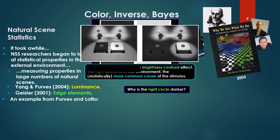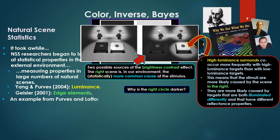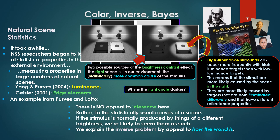Well we look at a natural scene. There's two possible sources of the brightness contrast effect we're just talking about. The right scene is in our environment, a normal environment, the statistically more common cause of the stimulus. Why? Because high luminance surrounds co-occur more frequently statistically with high luminance targets than with low luminance targets. This means that the stimuli are more likely caused by the scene on the right. They are more likely caused by targets that are both illuminated differently and have different reflectance properties. A statistical law. There's no appeal to inference here.